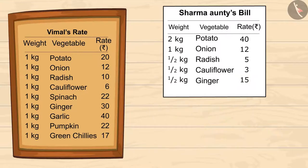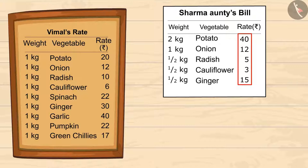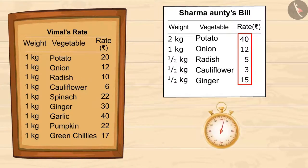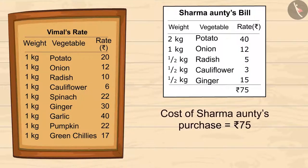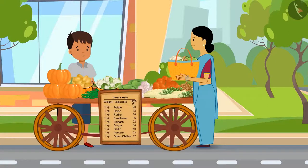So this is the cost of shopping done by Sharma auntie. Now let's add all this to find out the total price. Kids, you can pause the video to find out the sum. Look, Vimal has already added all the numbers. Is your total also 75 rupees? Sharma auntie has to give 75 rupees to Vimal.